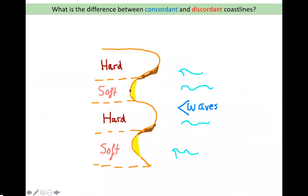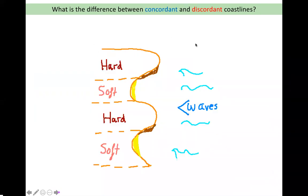Have a look at the diagram on the screen. You can see that there are two different types of rock facing the sea — there is hard rock and there is soft rock. If you remembered correctly, you would have identified this as a discordant coastline. In the diagram you can see the hard rock is sticking out into the sea because it is more resistant to erosion so it erodes more slowly. This coastal landform is called a headland.